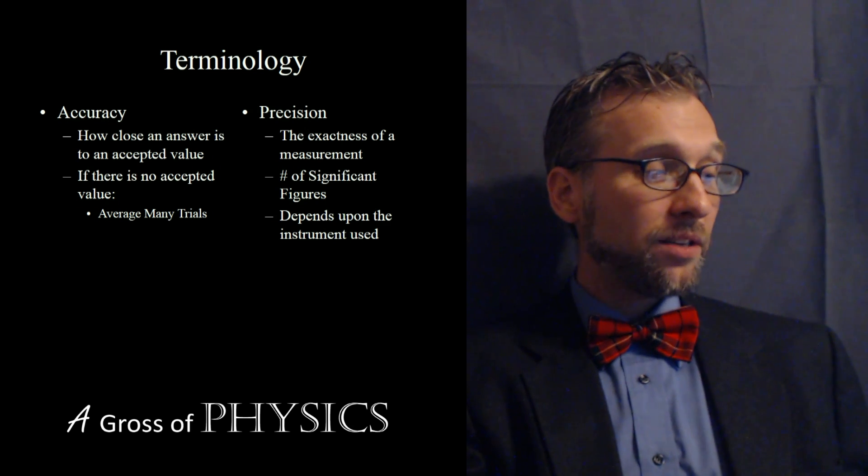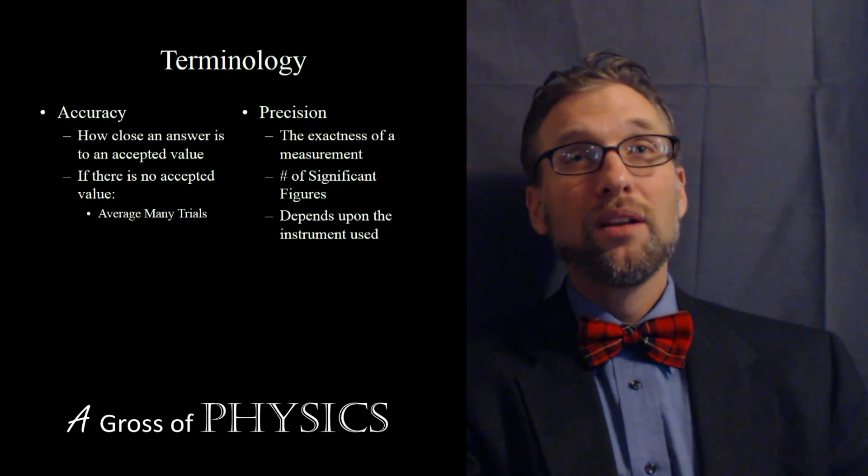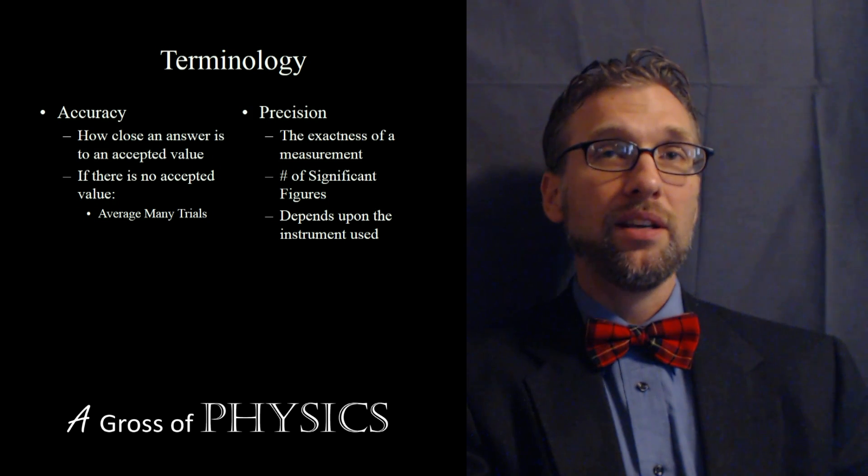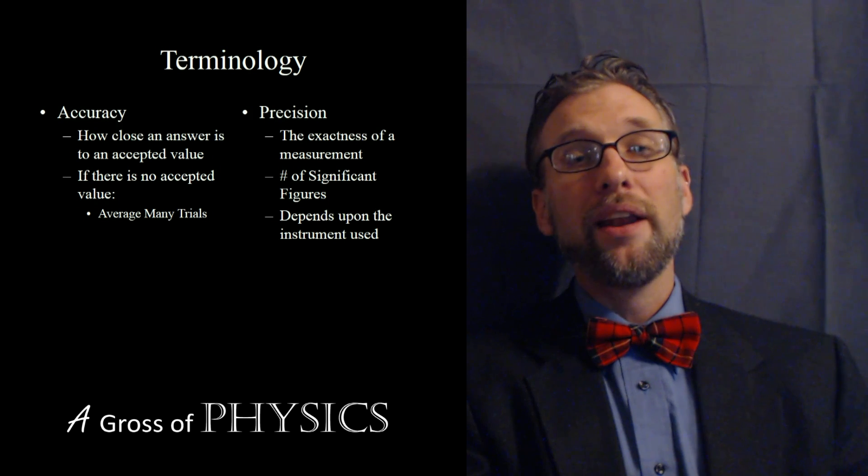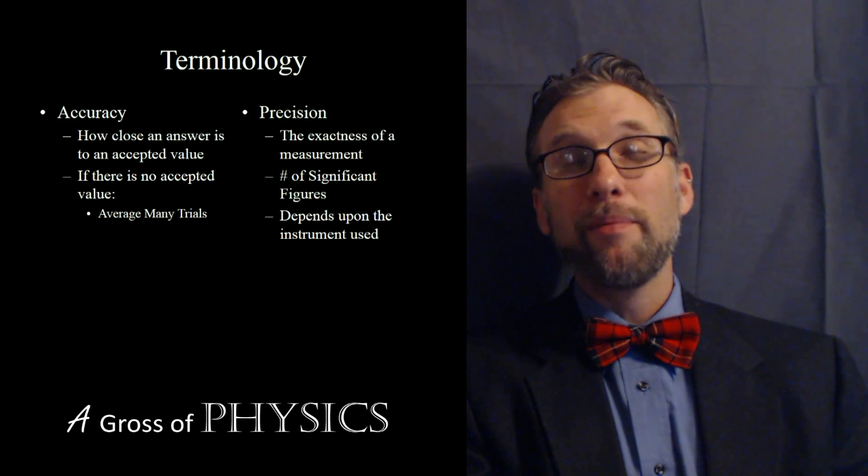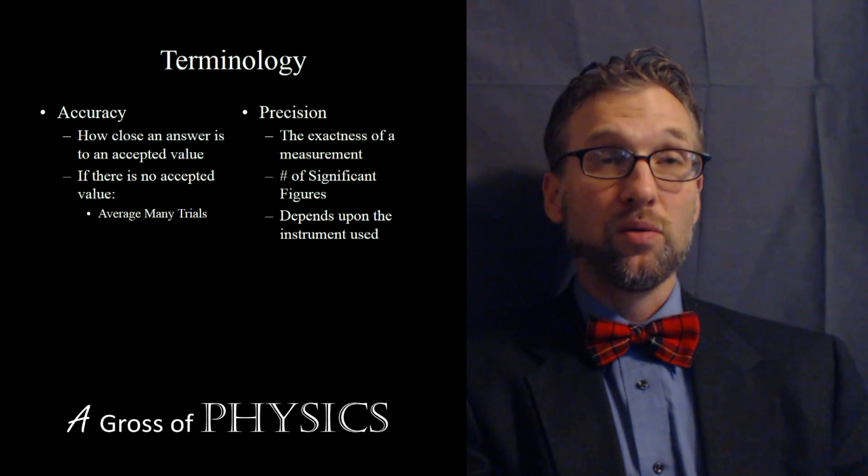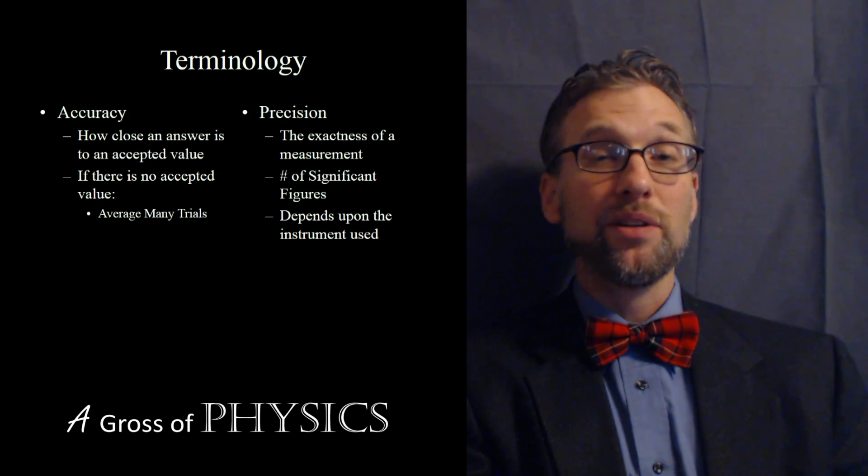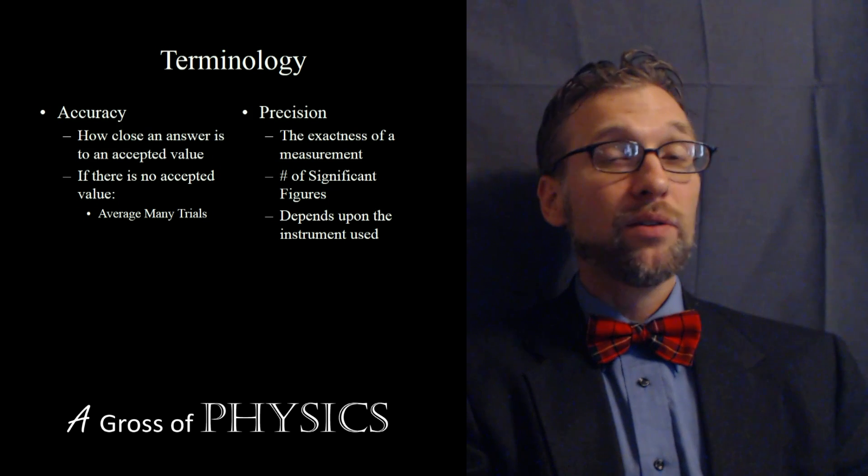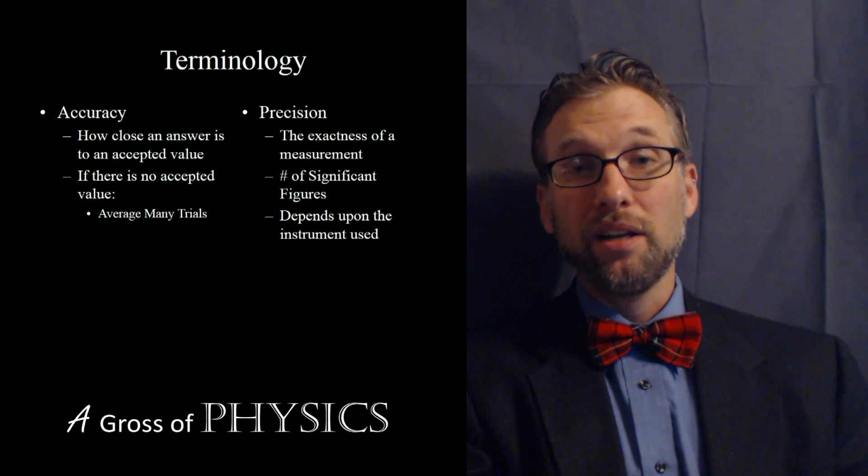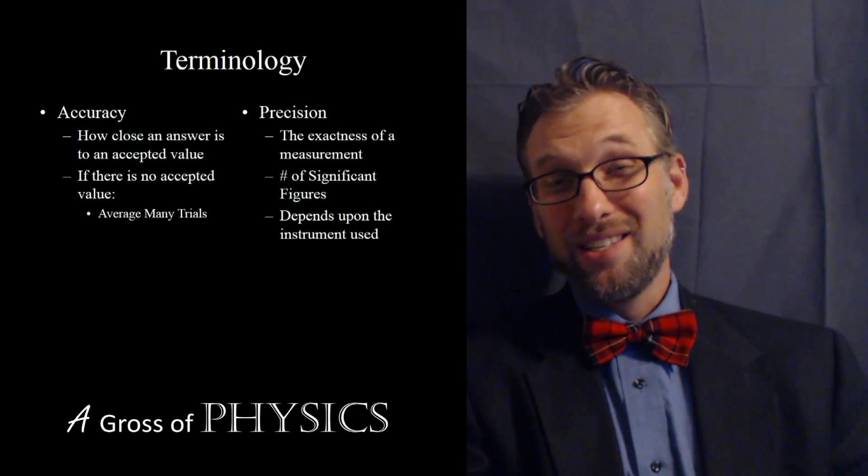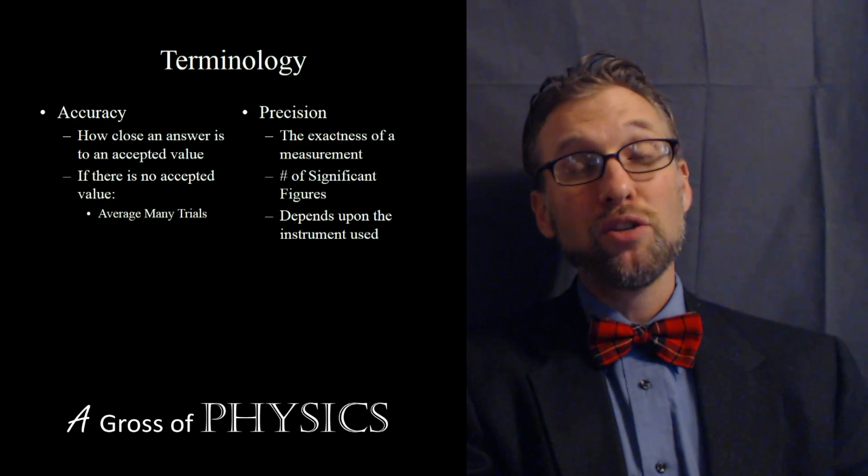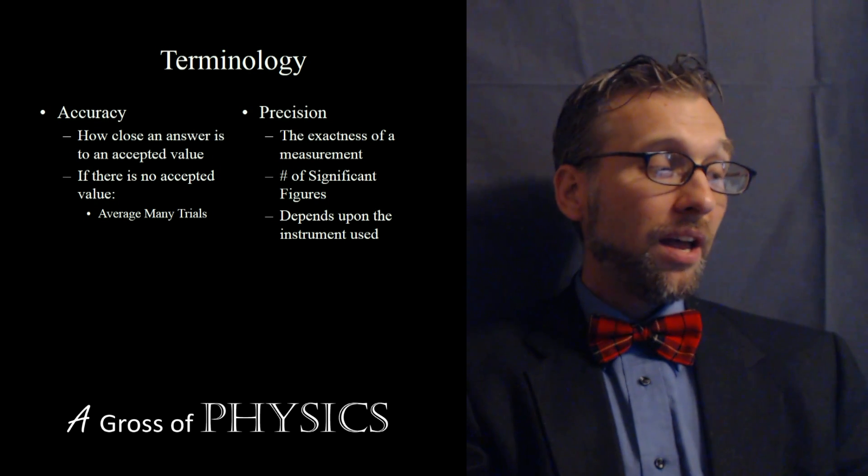Now, as far as definitions. One of the things that we need to worry about in physics is using words that are used in everyday language that may have a slightly different meaning in physics or in science in general. And one of the combinations is accuracy and precision. Accuracy and precision are used in everyday language meaning the same thing. It means being right typically. People use it in everyday language and often misuse it if they're talking scientifically.